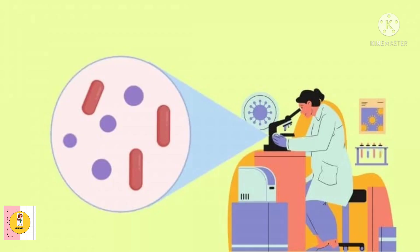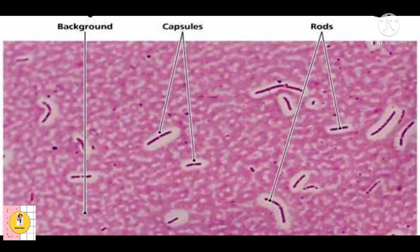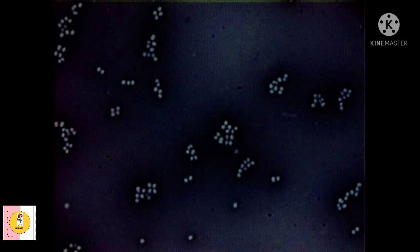Then we will remove the excess fluid if there is any, then we will examine. Let's see the results. Here, the organism and background is stained, leaving the capsule or cells unstained. That is, the organism in the background will be stained or colored, but our cells will not be colored. Thus we can identify the cells.